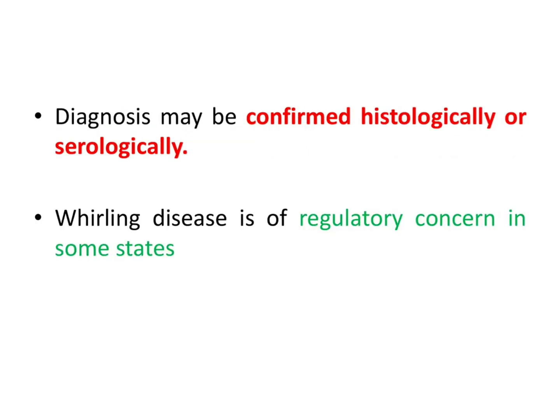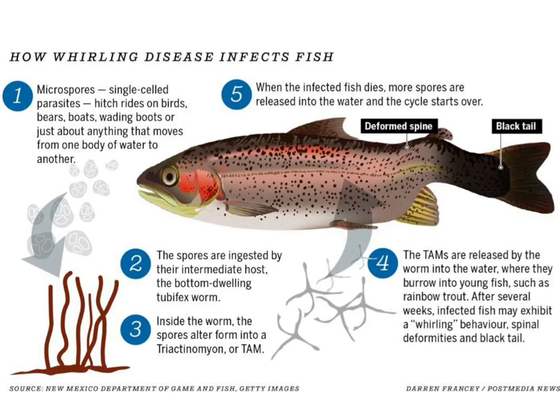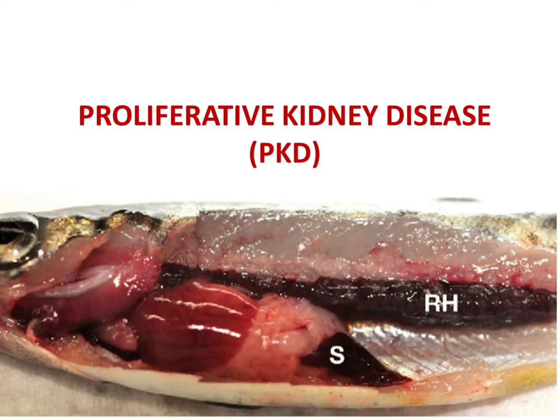Diagnosis can be confirmed histologically or serologically, and whirling disease is of regulatory concern in some states. How whirling disease infects fish: the Myxobolus spores are ingested by the intermediate host, the tubifex worm, and inside the worm the spores transform into triactinomyxon (TAM). The TAM will burrow into young fish such as rainbow trout, which then exhibit whirling behavior, spinal deformities, and black tail. When the infected fish dies, the spores are released into the water and the cycle starts over.